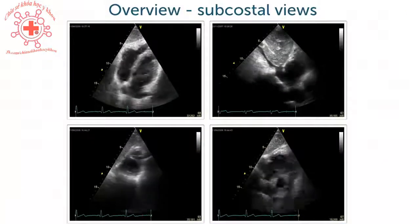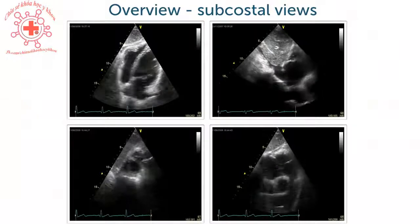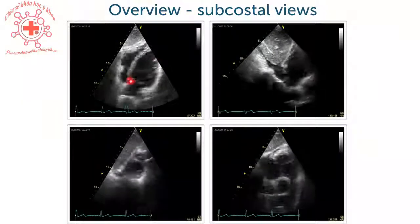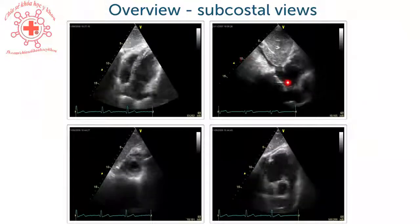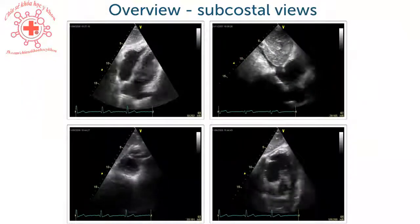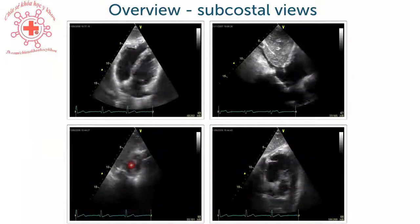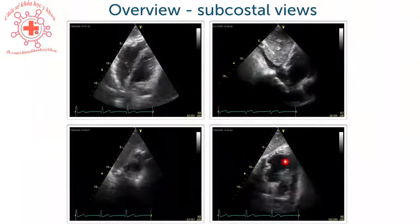Let's put it all together: from a subcostal window you can obtain the four chamber view, the long axis view with the IVC and SVC, the short axis view at the level of the ventricle, and the short axis at the base of the heart with the pulmonary artery. The take-home message: most importantly, use it in every patient. Be creative — you can get many atypical views. Don't forget that when imaging the heart we must also image the vessels leading to it, so it's mandatory to look at the IVC. In the next lecture we'll be taking a look at the suprasternal view.